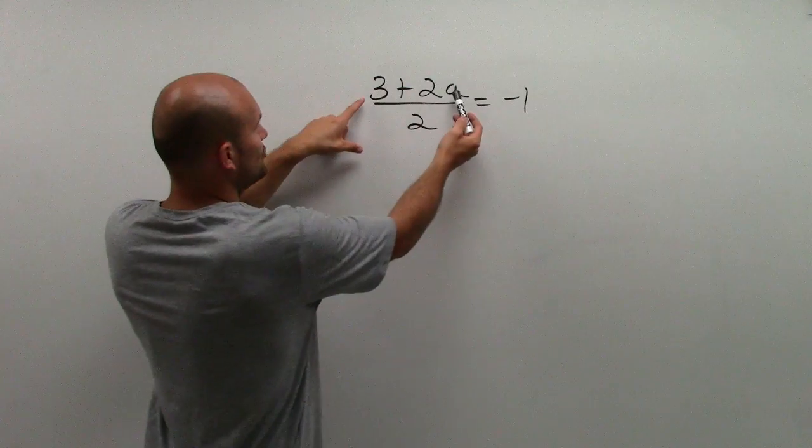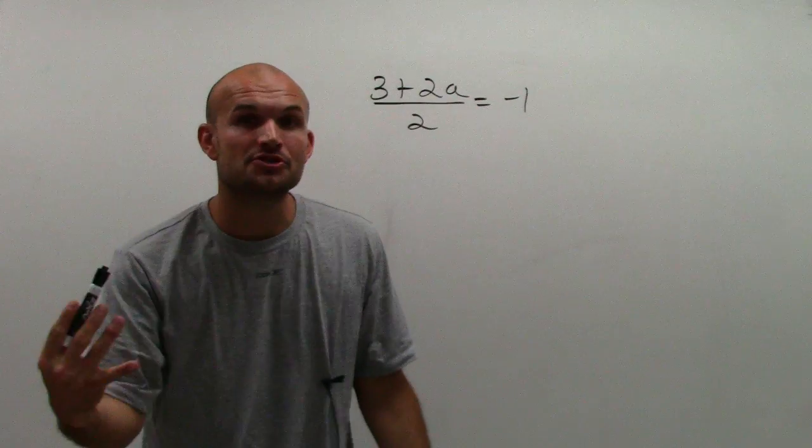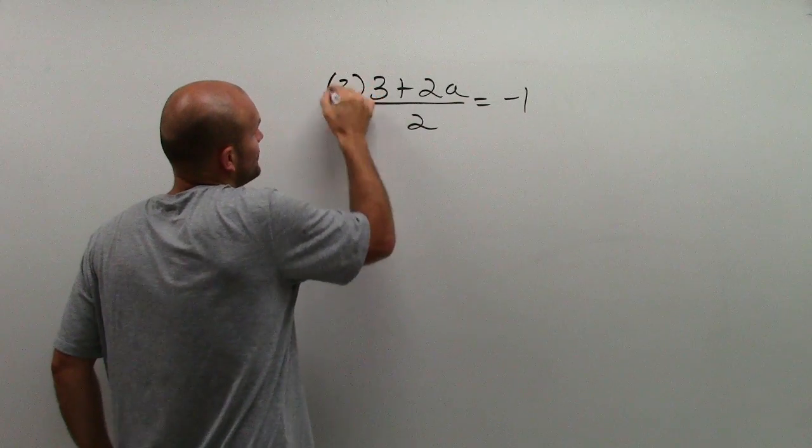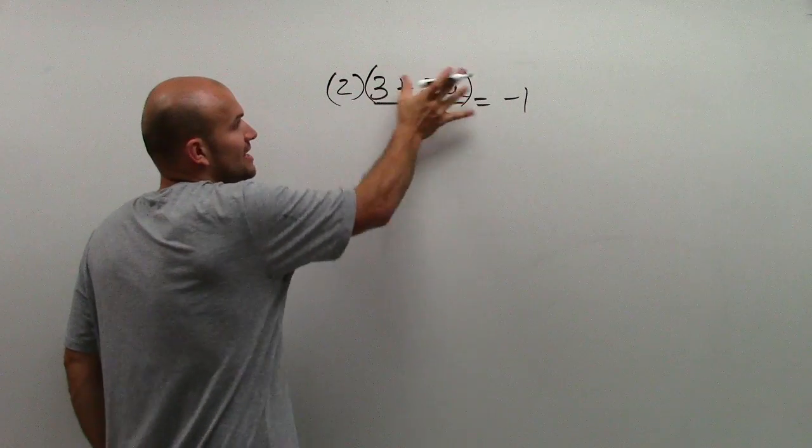I have this numerator, and it's being divided by 2. So to undo dividing by 2, I need to multiply by 2. So I'm going to multiply the 2 times that whole numerator.